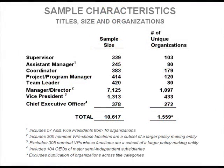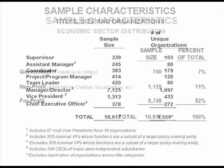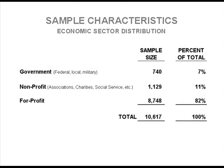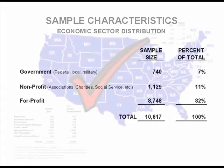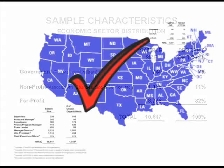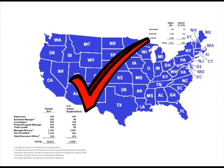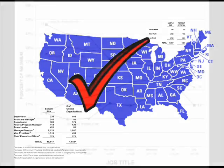Our real-world sample consists of 10,617 individuals from 1,559 different organizations. Those 10,617 people came from the government, non-profit, and for-profit sectors. It is safe to say that the sample's large size, wide range, and diversity make it reasonably representative of the nation as a whole.